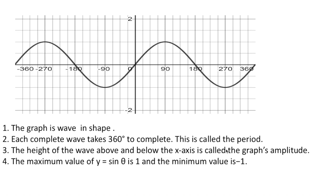The height of the wave above and below the x-axis is called the amplitude. The highest point above my x-axis is my maximum amplitude, and the lowest point is my minimum amplitude. For y equals sine theta, the maximum amplitude is 1 and the minimum is minus 1.